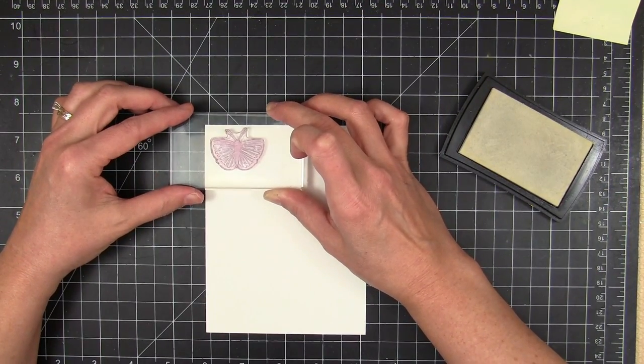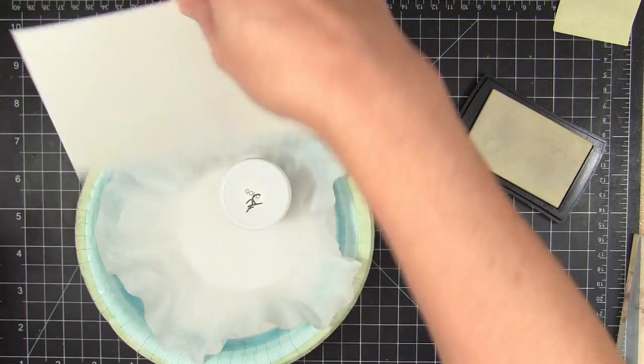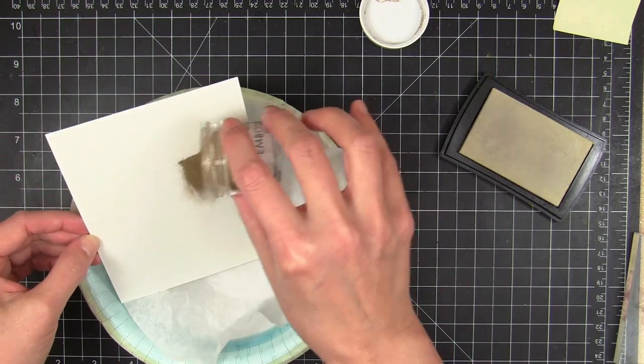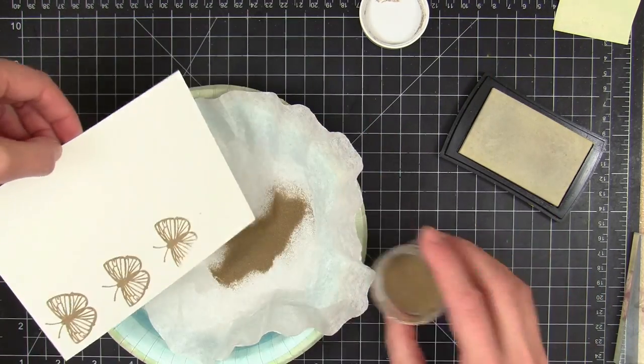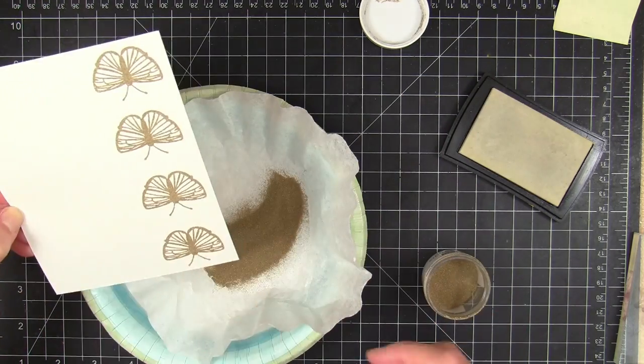So now I'm gonna create the butterfly embellishments for this card by stamping some multiple butterflies from Up the Happy onto a quarter sheet of watercolor paper. I already prepped it with an anti-static pouch and then I stamped the first row with the VersaMark ink. And then I'm gonna apply some Hero Arts gold embossing powder.